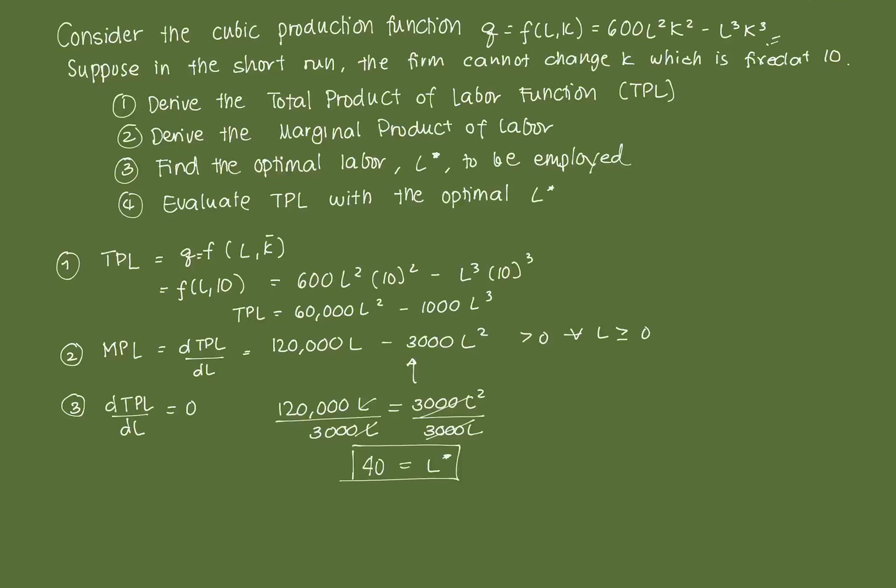Then the last question here is we need to evaluate the total product of labor function with respect to the optimal amount of labor. So that's TPL, which is equal to Q, which is equal to F(40,10). That's equal to 60,000 times 40 squared minus 1,000 times 40 cubed. And if we solve for this one, for the first term, we get 40 squared times 60,000. So that should be 96 million.